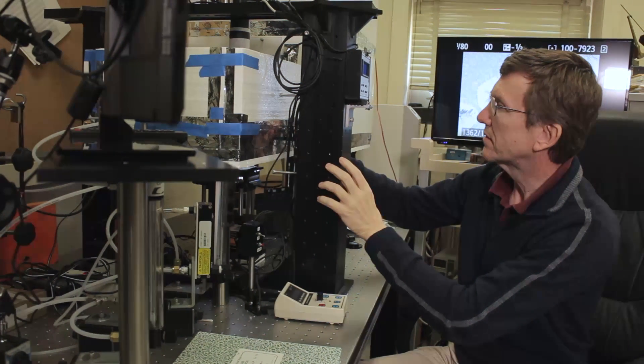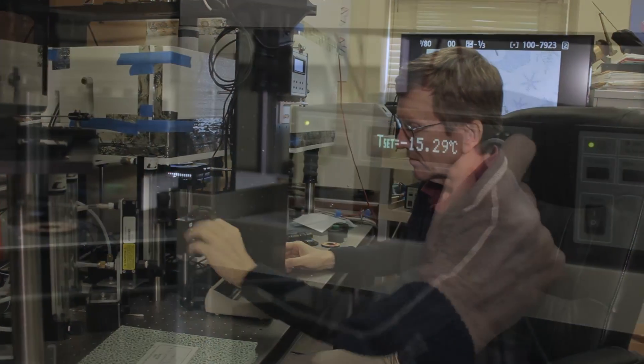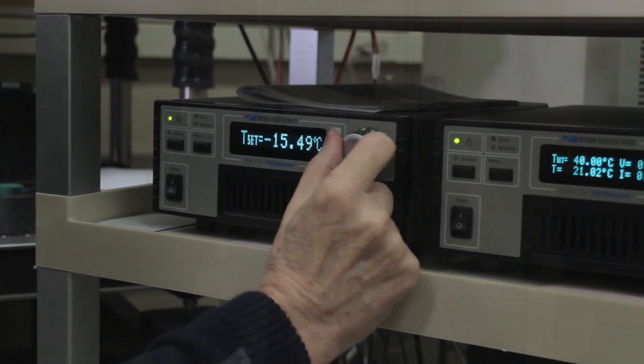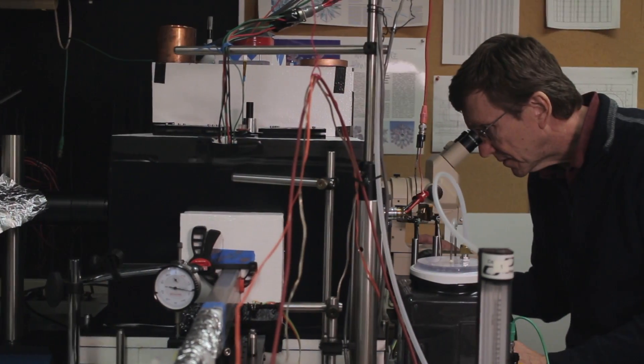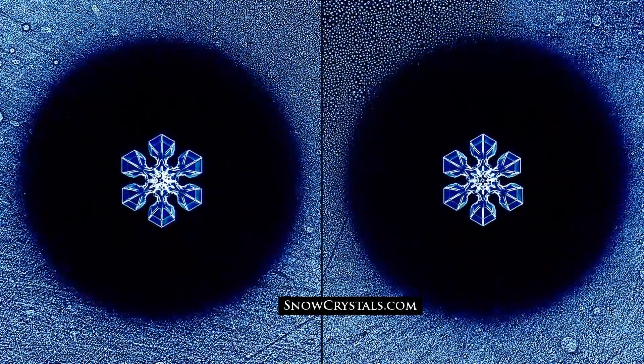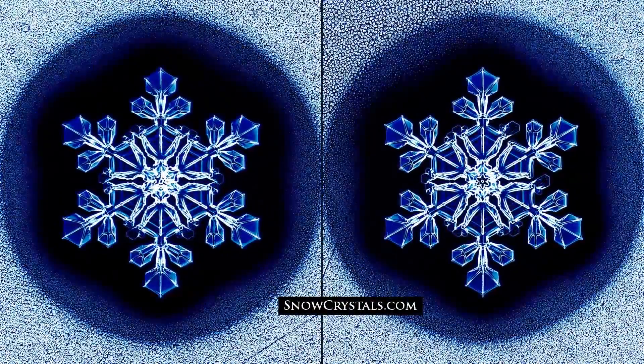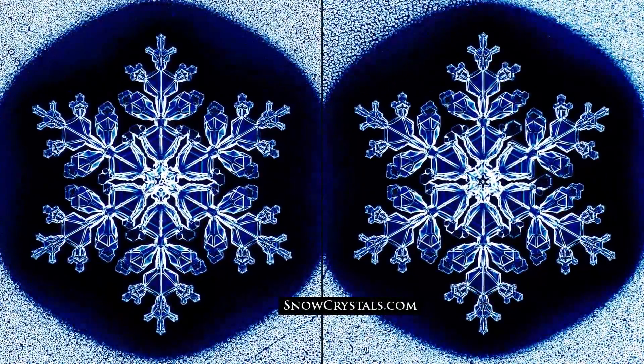What I try to do in the lab is grow crystals under different conditions. So I'll change the temperature and the amount of water vapor, the humidity basically that I'm feeding the crystals, and then I'll watch the growth and measure the growth rates very carefully. We can actually grow these things in the same conditions at the same time and so we can really make them grow very similarly and get what looks like almost identical snowflakes.